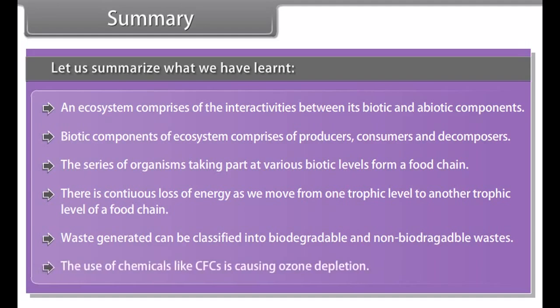Summary. Let us summarize what we have learnt. An ecosystem comprises the interactivities between its biotic and abiotic components. Biotic components of an ecosystem comprise producers, consumers and decomposers. The series of organisms taking part at various biotic levels form a food chain. There is continuous loss of energy as we move from one trophic level to another. Waste generated can be classified into biodegradable and non-biodegradable wastes. The use of chemicals like CFCs is causing ozone depletion.